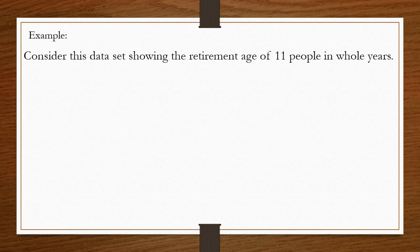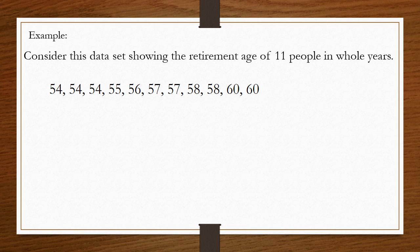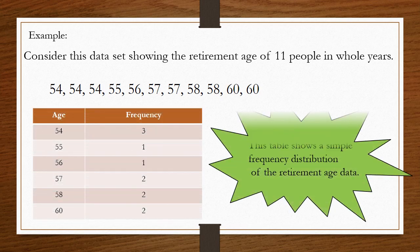Example: consider this data set showing the retirement age of 11 people in full years: 54, 54, 54, 55, 56, 57, 57, 58, 58, 60, and 60. Now, this table shows a simple frequency distribution of the retirement age data.